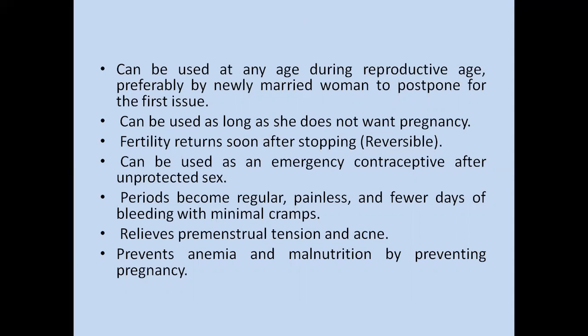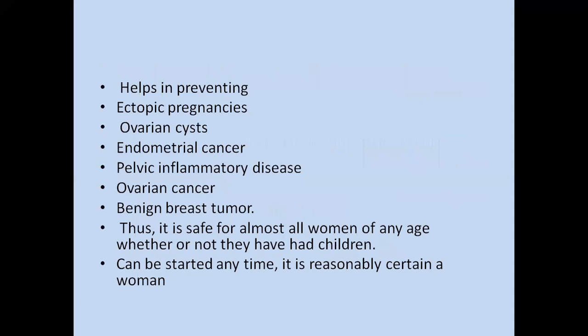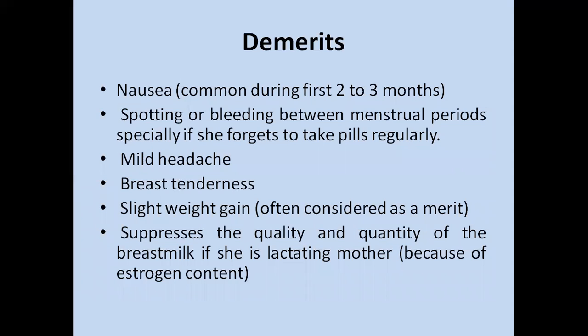OCPs can be used as emergency contraceptives after unprotected sex. Periods become regular, painless, with fewer days of bleeding and minimal cramps. They relieve premenstrual tension and acne, and prevent anemia and malnutrition by preventing pregnancies. They also help in preventing ectopic pregnancies, ovarian cysts, endometrial cancer, pelvic inflammatory disease, ovarian cancer, and benign breast tumours. They are safe for almost all women of reproductive age, whether or not they have had children, and can be started at any time.